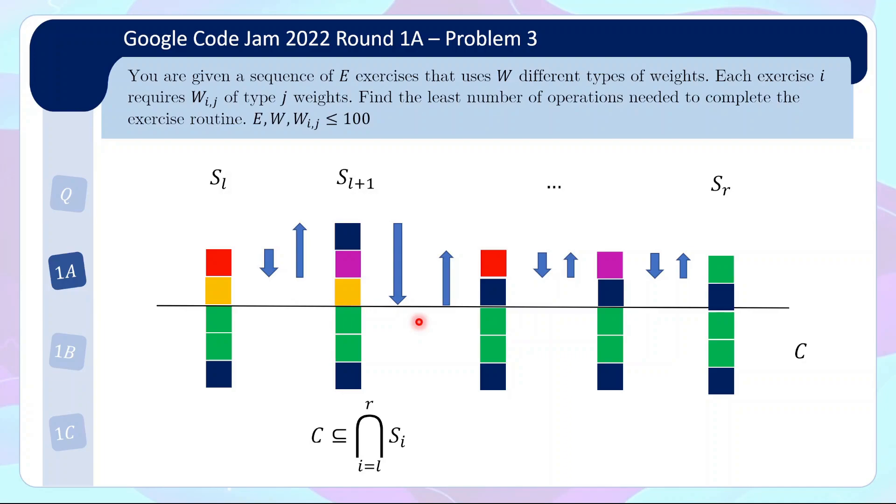There's actually a concrete way to describe C. Firstly we see that C is used in all the exercises so C must belong to the intersection of all the exercise requirements but also conversely if there's a common intersection between all the exercise requirements it makes sense in the optimal set to put these common requirements at the bottom of the stack and never touch it so that we don't have to waste operations adding and removing the weights. So actually C is given by the intersection of all the exercise requirements from L to R.